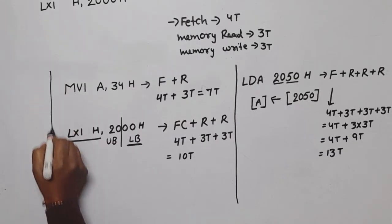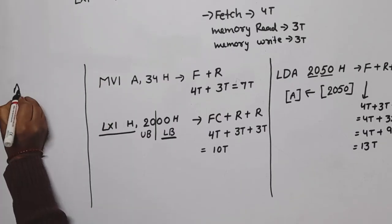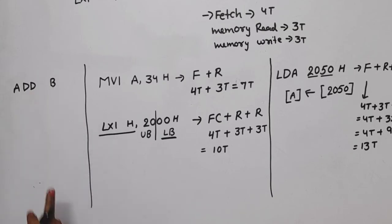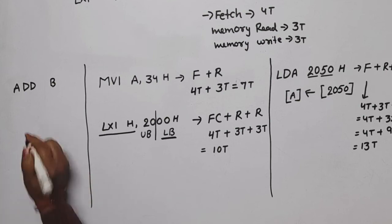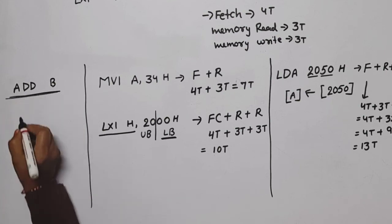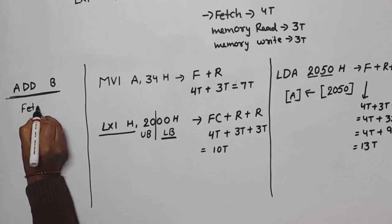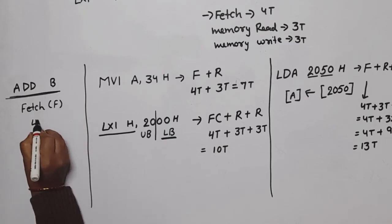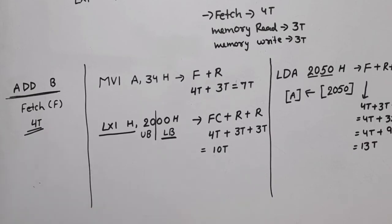Now one more example. If suppose your instruction is ADD B, now see here there is no data. No data, that's why only fetch will be used, that is fetch only. Fetch is required. Number of T, how much will it be? 4T.